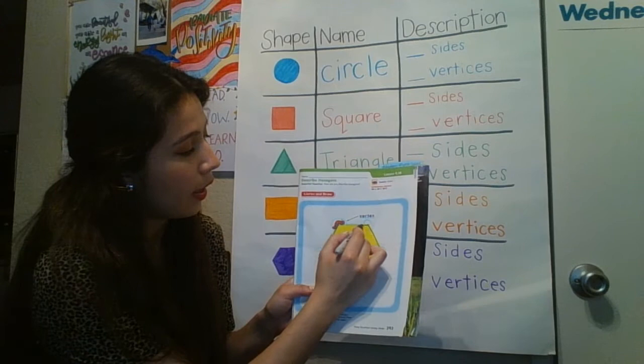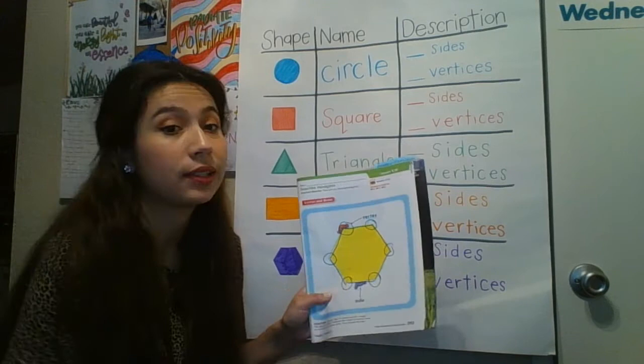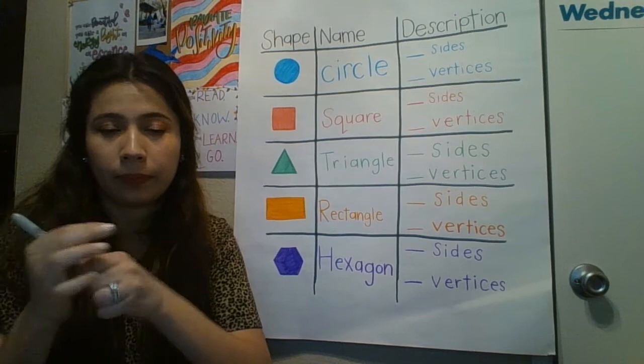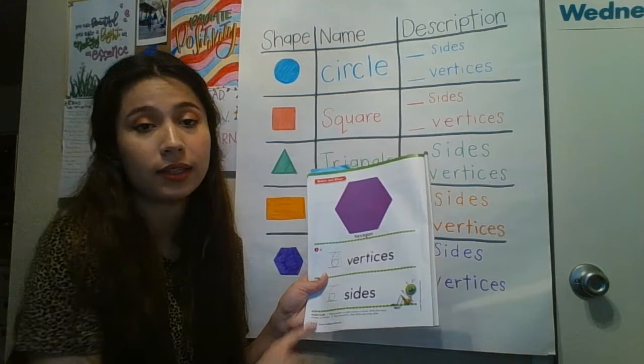Now let's count the vertices. One, two, three, four, five, and six. Six vertices. On the next page, it asks us how many vertices do we have, and I already wrote down six. There are six vertices — we just counted them — and there are six sides. That's how we know that it's a hexagon.